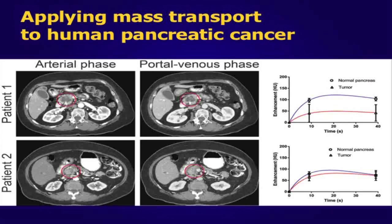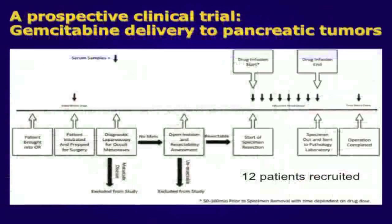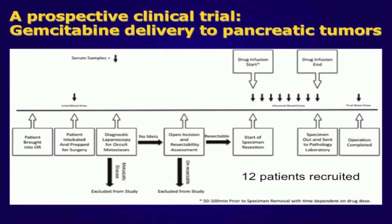Patient two, on the other hand, has a tumor that enhances very similarly to the normal pancreas, and this is also captured in the measurements and the mathematical model. We conducted several studies to show that the mathematical model was robust. While we developed this mathematical model and the CT analysis method, we also conducted a novel clinical trial where we infused gemcitabine during the curative resection of patients with pancreatic cancer. The concept for the trial is shown here in the figure.